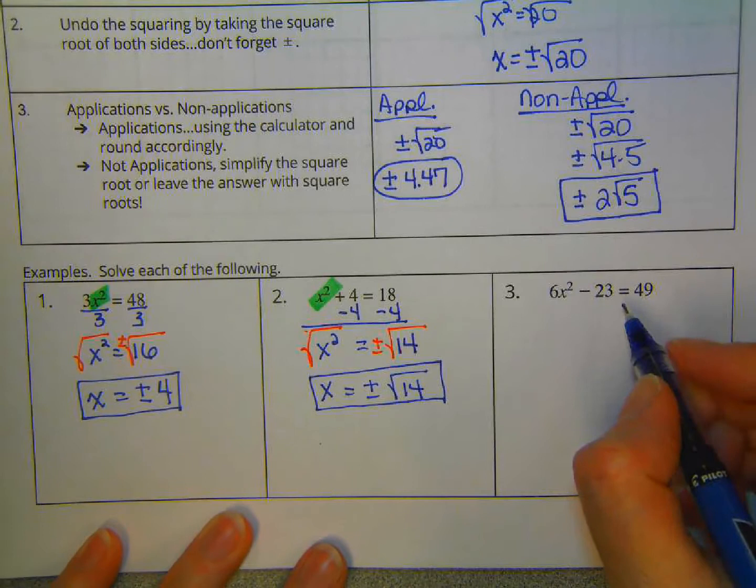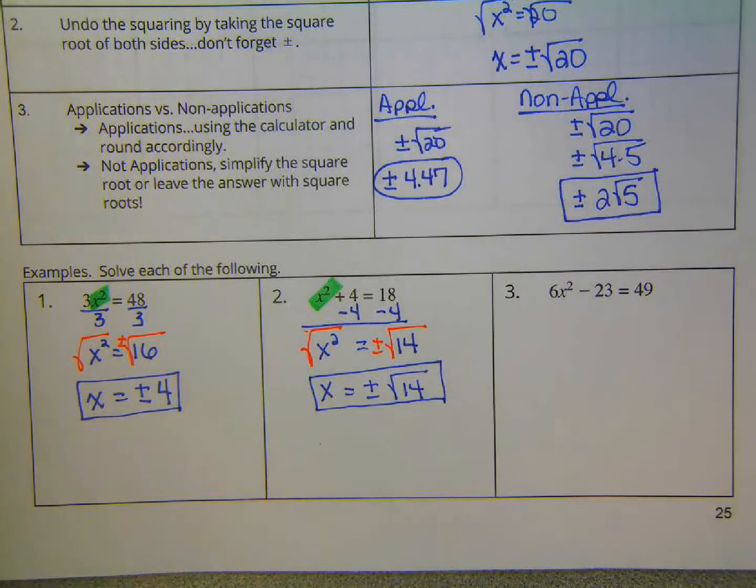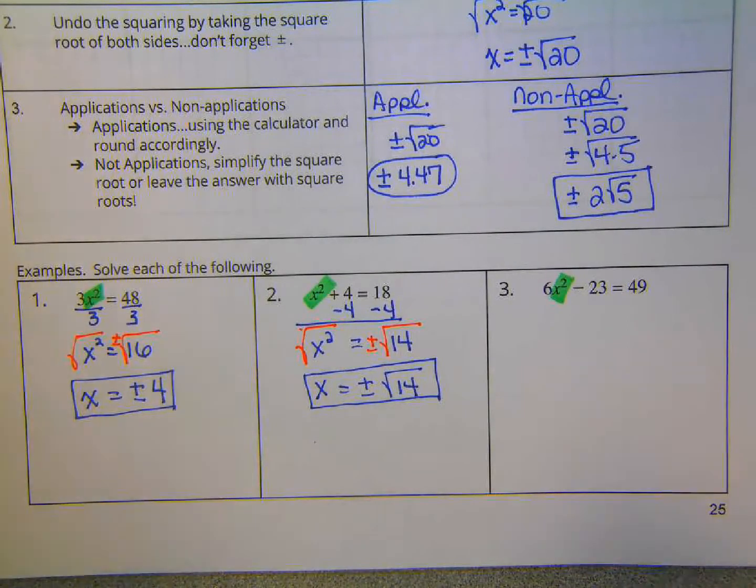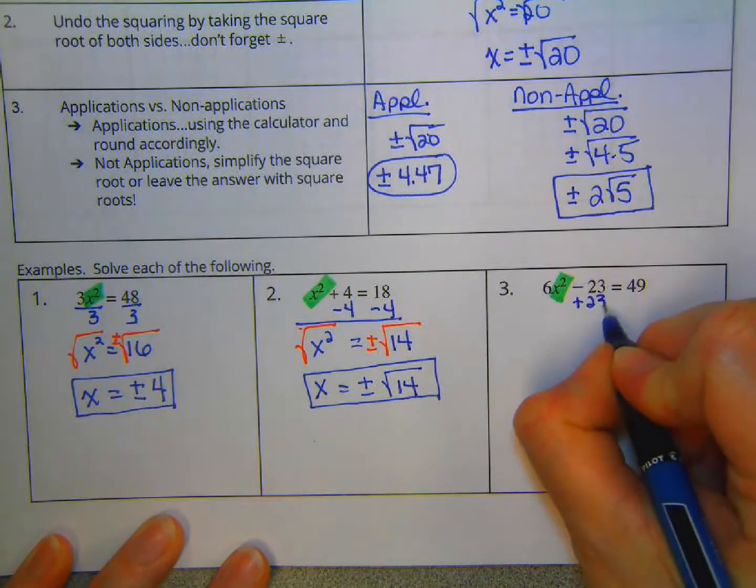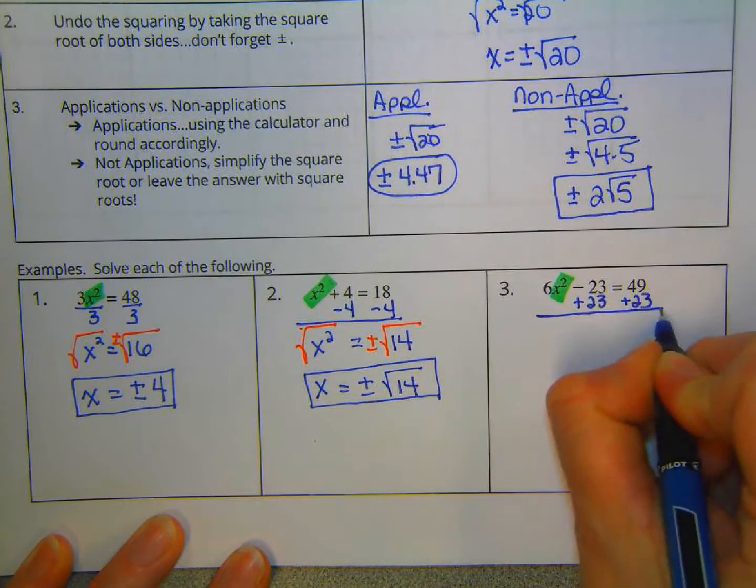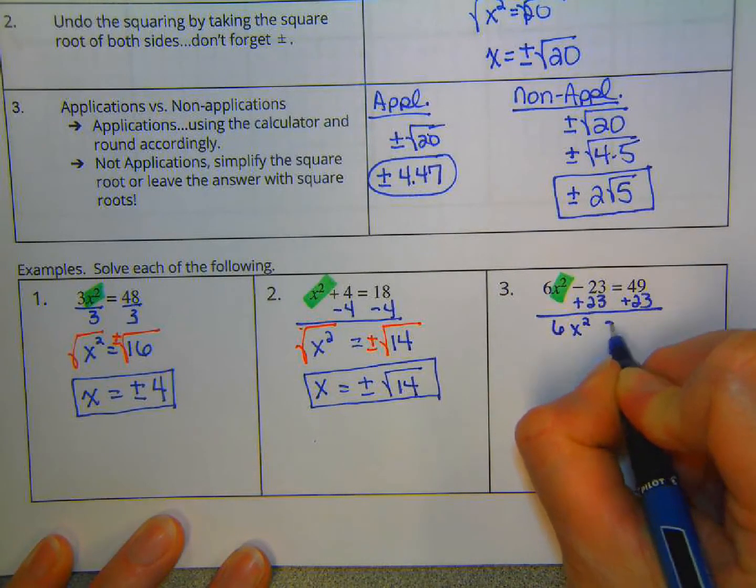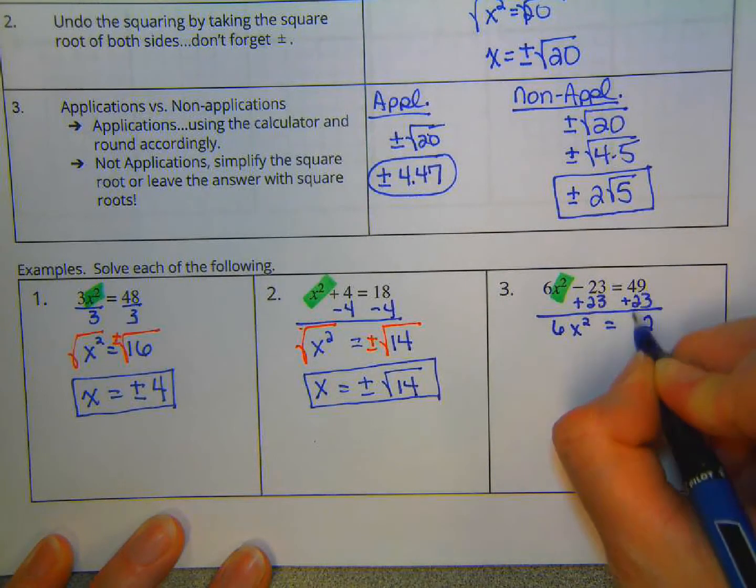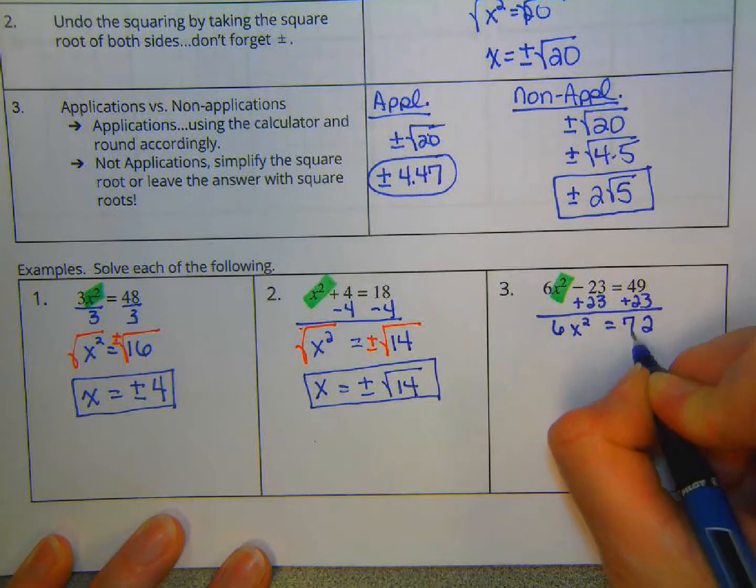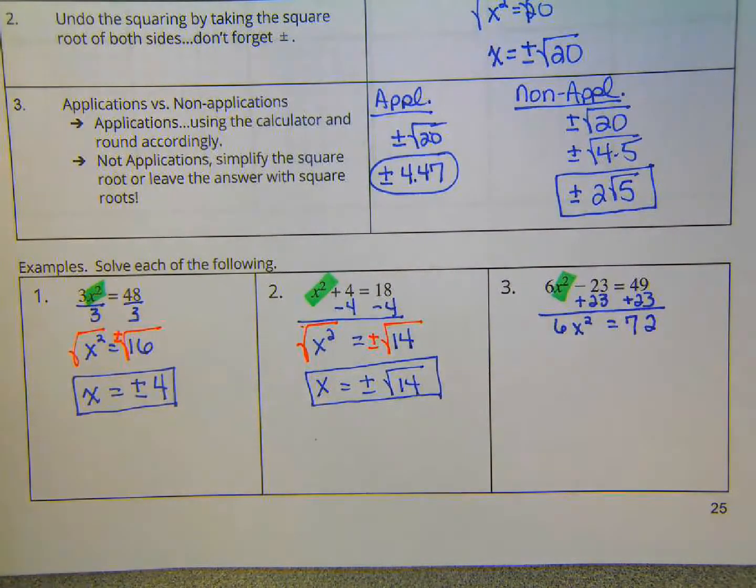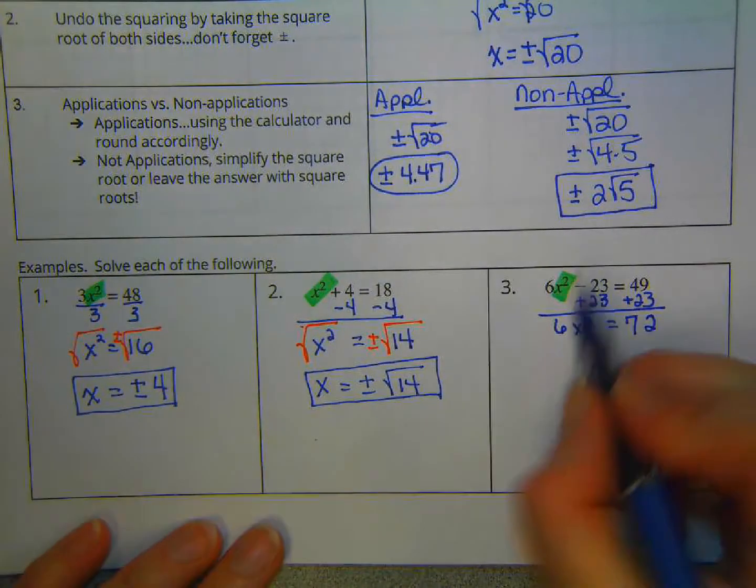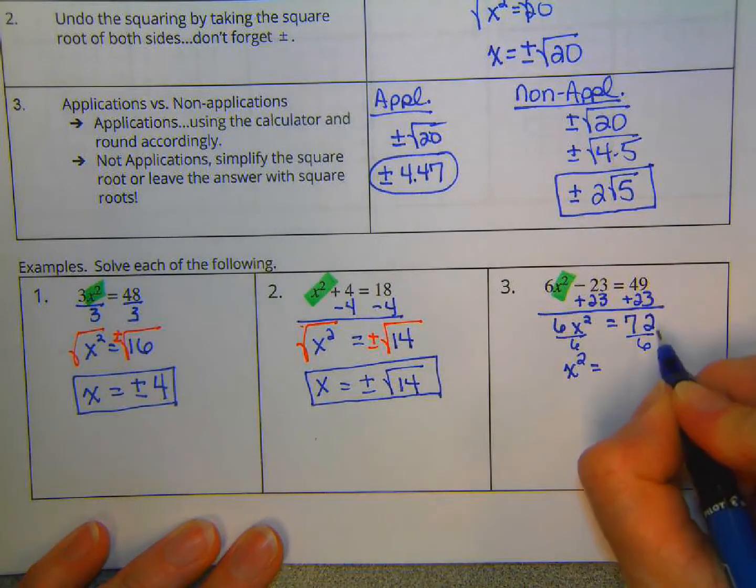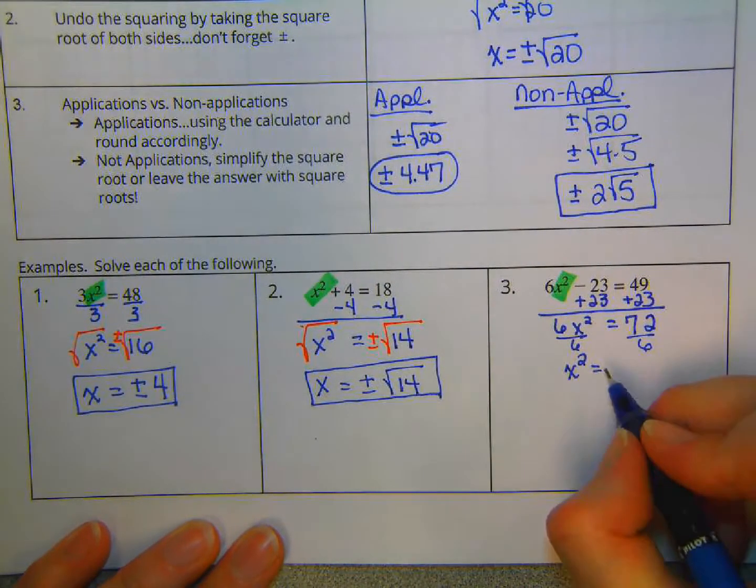For this one right here, we want to get the x squared by itself. So we are going to add 23. And that leaves us with 6x squared equals, let's see here, 9 plus 3 is 12. Carry the 1. 4 plus 2 plus 1 is 7. 72. Okay, we still want that x squared by itself. So now we are going to divide by 6. And that leaves us with x squared equals 72 divided by 6 is 12.